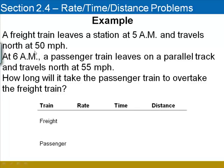As I read through the problem, I notice that the freight train is traveling at 50 miles per hour, so I will write a rate of 50 for the freight train. In the same fashion, I notice the passenger train is traveling at 55 miles per hour, and I'll put 55 for its rate.